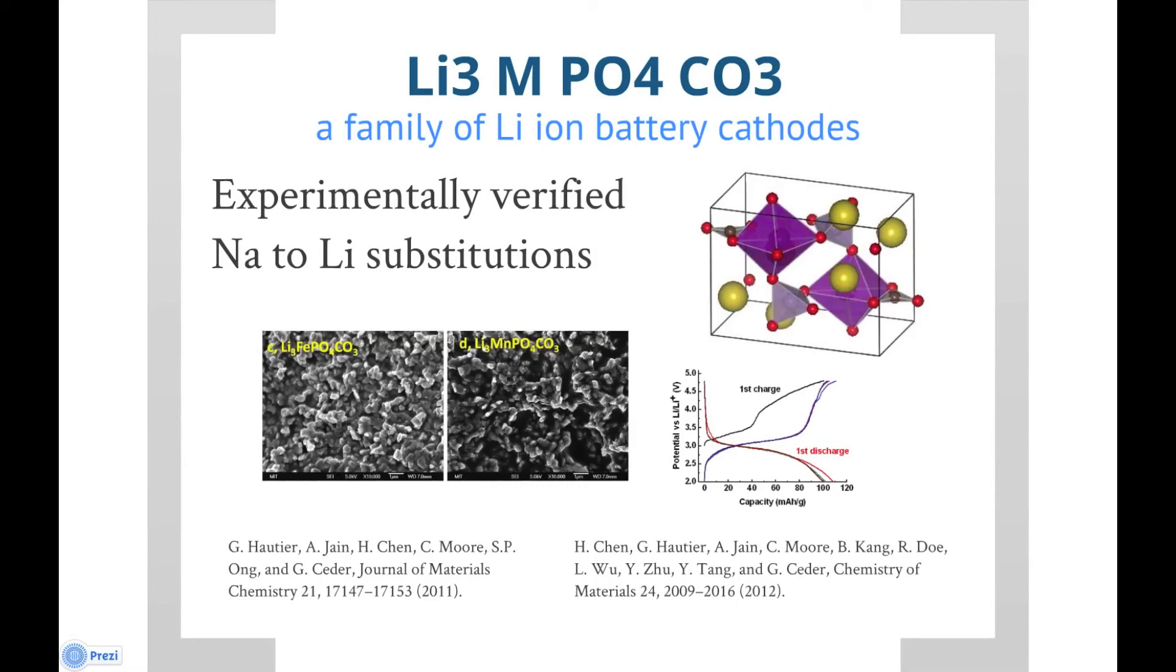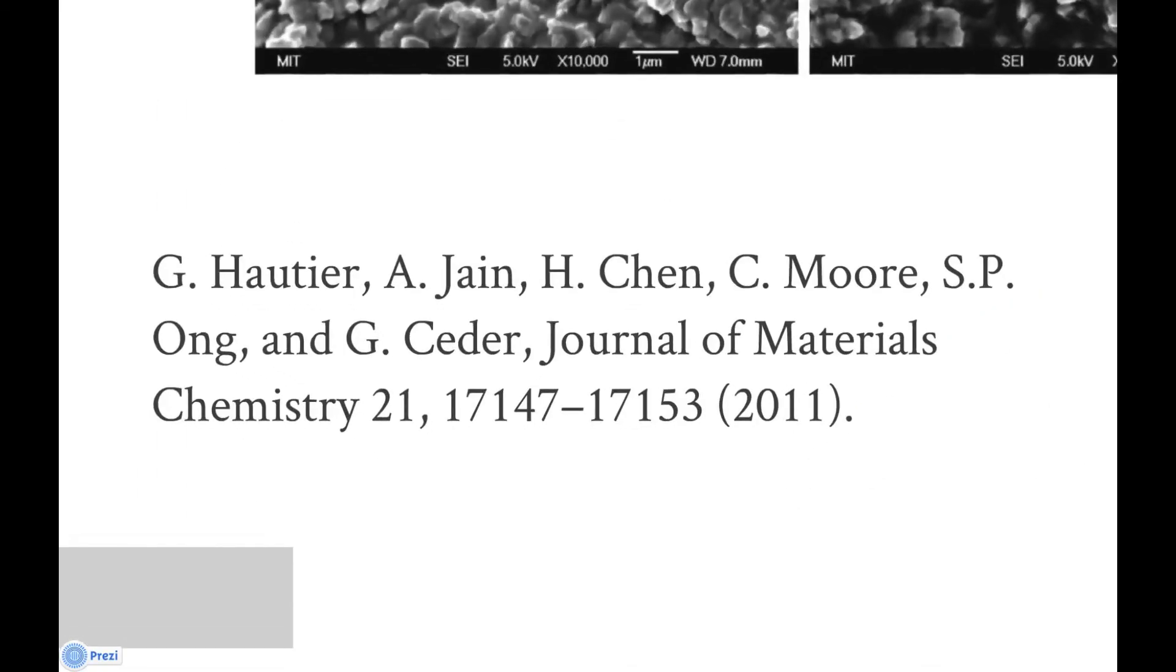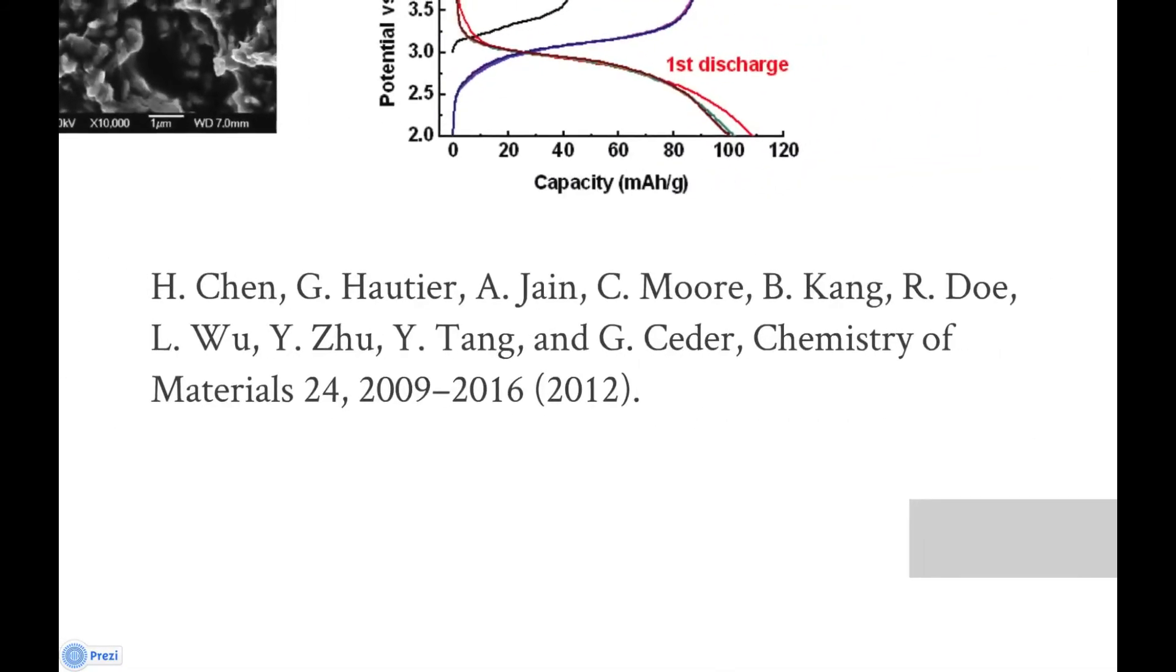The second example is a family of compounds that include lithium, metal, and phosphate and carbonate groups. These materials are also interesting lithium-ion battery cathodes. Although the sodium versions of these compounds are known minerals, the lithium analogues were not known to exist. We were able to make these materials through hydrothermal synthesis and ion exchange. Details can be found in two papers, one in the Journal of Materials Chemistry and the other in Chemistry of Materials.